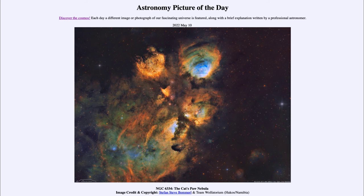Those bright stars emit a lot of ultraviolet radiation that actually causes the material to be illuminated — it excites the hydrogen gas and causes it to give off specific wavelengths of light. In this case, there is a specific wavelength in the red of hydrogen that we see. Hydrogen makes up most of the material here, but we can also study it with other emission lines, tracing where the oxygen and sulfur are within the nebula.